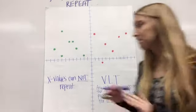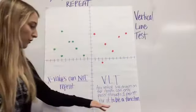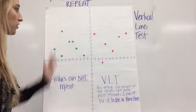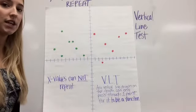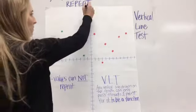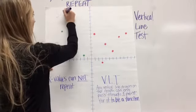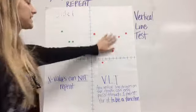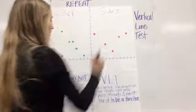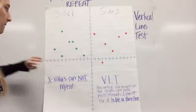Okay, so that means then, if this is true, that if it passes through two or more points whenever I draw a vertical line, it is not a function. So we're going to look at both sides of the graph. This green side is one side, side 1. And then we're going to look at this side, which is a completely different graph. Side 2. So first, let's start with the green dots.